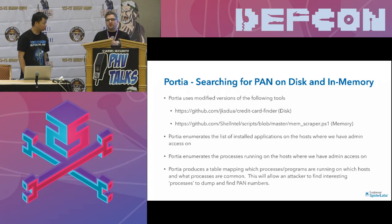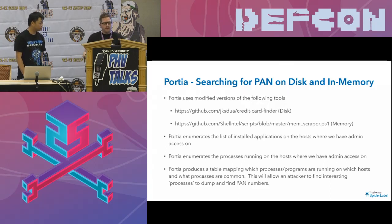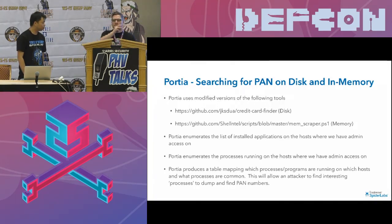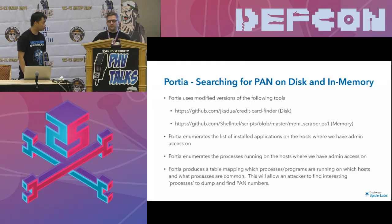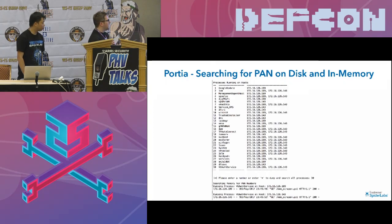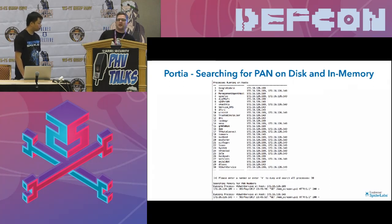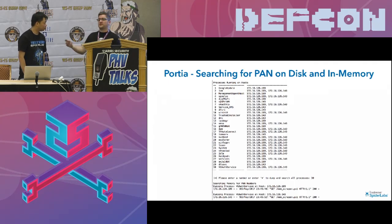This is an example of a convenience module not directly related to privilege escalation or lateral movement but a common pen test activity. Most pen testing we do is for PCI, looking for credit card information. We have a module that searches for PANs on disk and in memory. For the memory scraper, Porsche enumerates a list of all applications on hosts we have admin access on, produces a table showing which programs are running on which hosts, and looks for interesting processes to dump. For example, doing a retail client with POS systems — their POS application potentially has credit card information in memory.